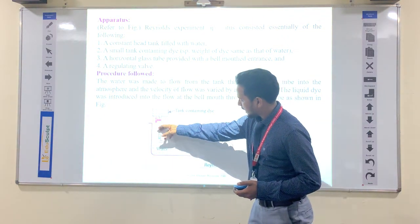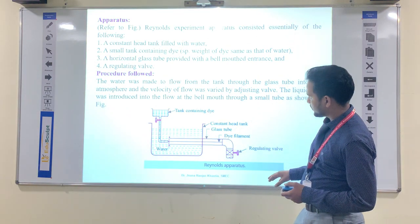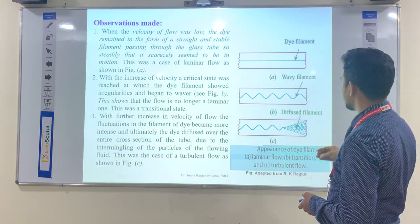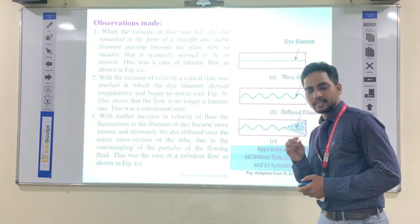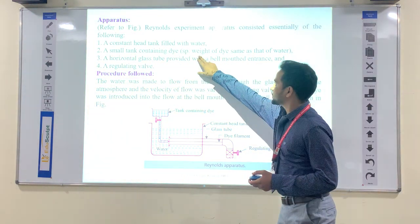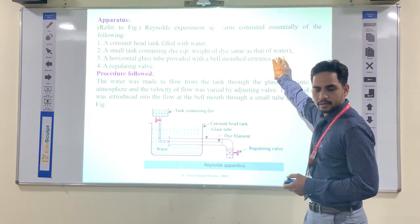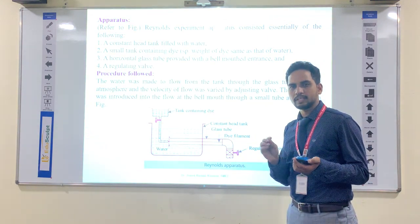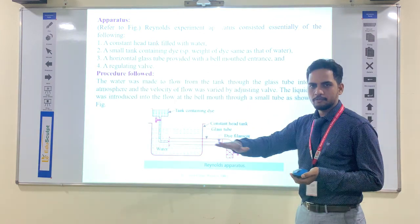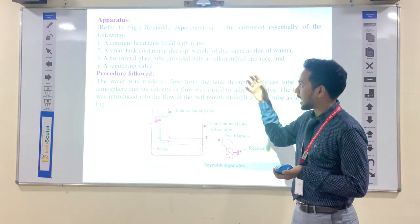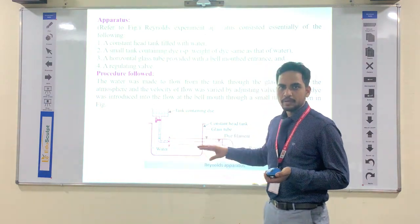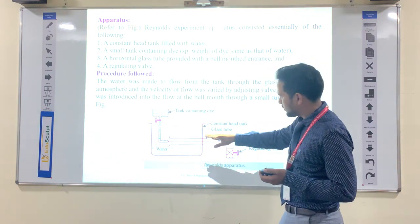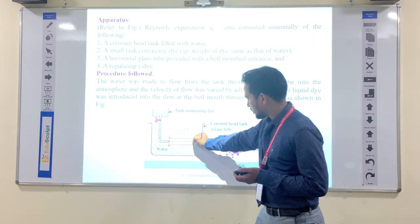After injecting the dye, Reynolds made observations based on the dye filament. One important thing to note: the specific weight of the dye is equal to that of water. If the dye's specific weight were lower, it would float at the surface; if higher, it would settle down. So the specific weight of the dye is the same as water so it remains inside.